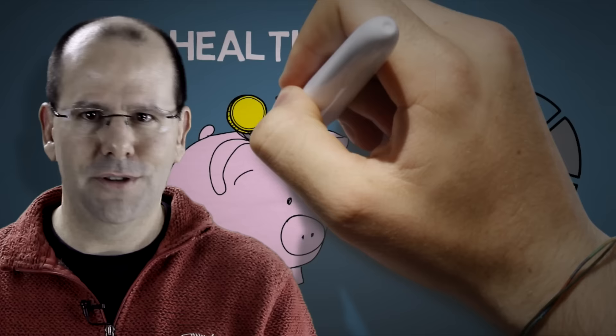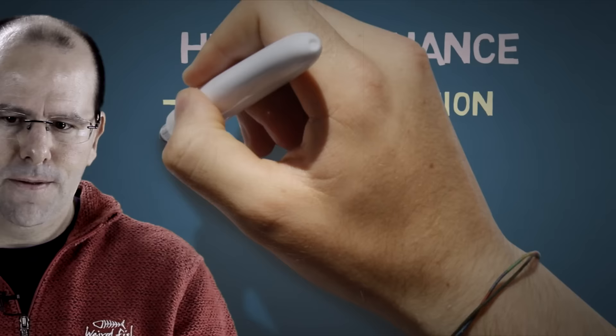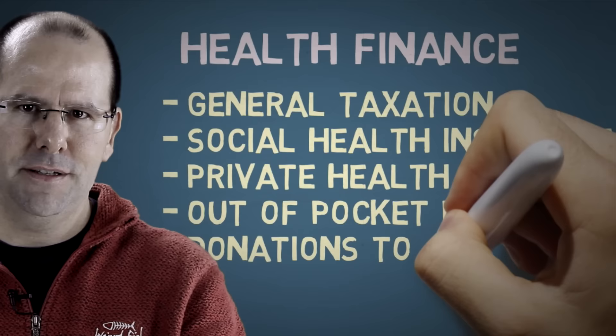Health finance is really about where the money comes from, how you find the money to do the things you want to do, and how that money is allocated into the various programs. Broadly speaking, most health systems are financed in a combination of five ways: general taxation, social health insurance, voluntary or private health insurance, out-of-pocket payments, and donations to charities. Most health systems use a combination of these five in some shape or form.